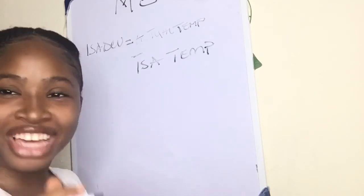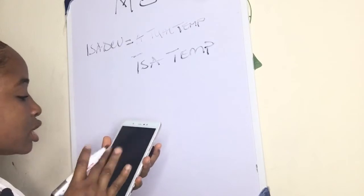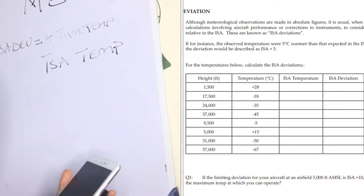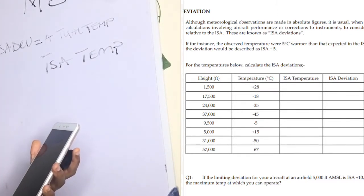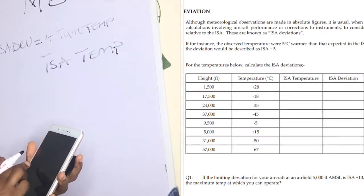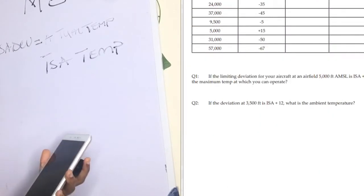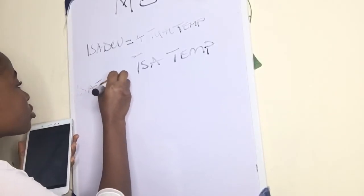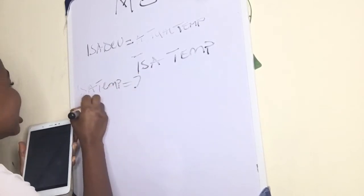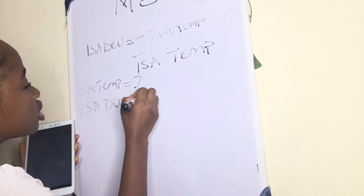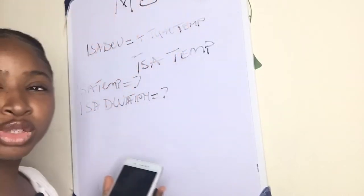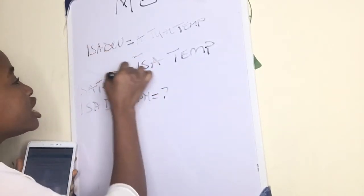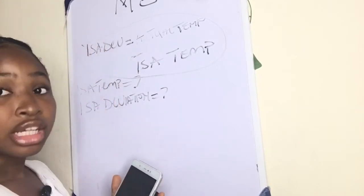They've given us the height in feet — now you need to know where to put this — and they've given us the actual temperature in Celsius at 1,500 feet. They want us to find two things: ISA temperature and ISA deviation. Throughout today's work, we'll be looking for both ISA temperature and ISA deviation.